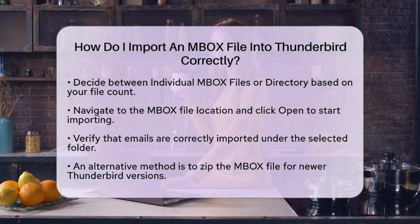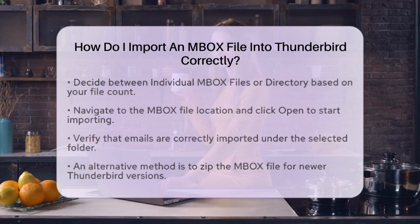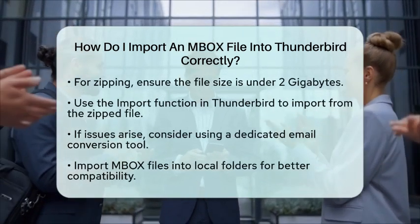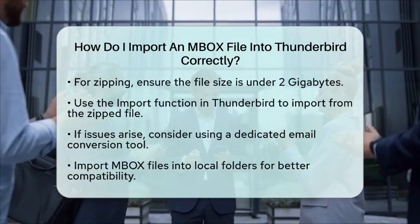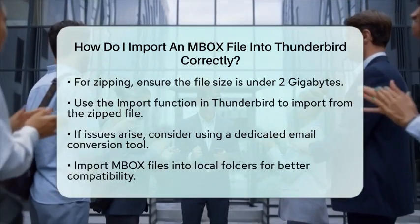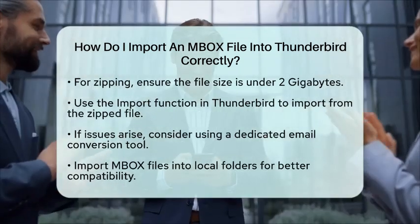If you prefer not to use add-ons, there is an alternative method. You can zip your mbox file first, but this method is limited to newer versions of Thunderbird and requires the file size to be under 2GB. To do this, zip your mbox file, then open Thunderbird and go to the Tools menu. Select Import and choose Import from a file. Browse to your zipped mbox file and click Next. Finally, click Start Import to begin the process.